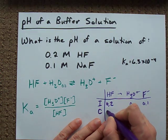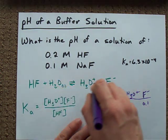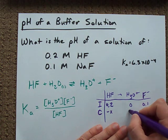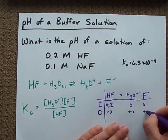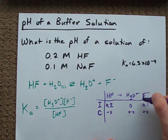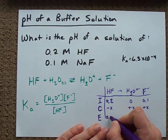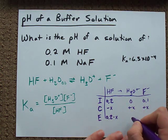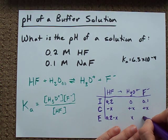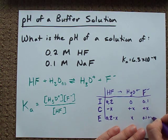The change - let's assume it goes to the right. Minus X for the reactants, plus X for the products, because we're gaining a certain amount that we don't know how much yet. And so, my equilibrium concentrations are 0.2 minus X, X, and 0.1 plus X.